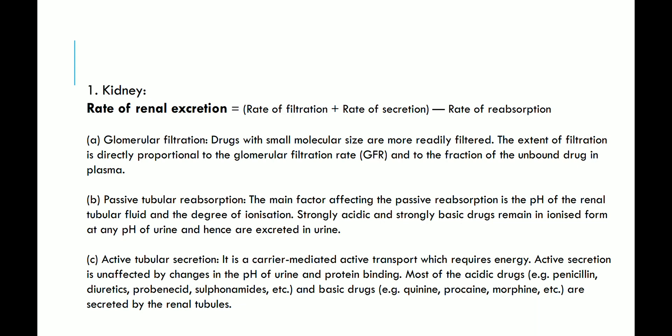Glomerular filtration: drugs with smaller molecule size are more readily filtered. The extent of filtration is directly proportional to the glomerular filtration rate and the fraction of unbound drug in plasma. Passive tubular reabsorption: the main factor affecting passive reabsorption is the pH of the renal tubular fluid and the degree of ionization. Strongly acidic and strongly basic drugs remain ionized at any pH and are excreted in urine. Active tubular secretion is a carrier-mediated active transport requiring energy, unaffected by changes in urine pH and protein binding. Most acidic and basic drugs are secreted by the renal tubules.